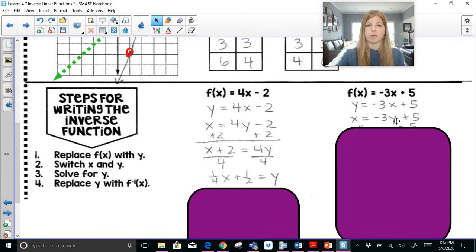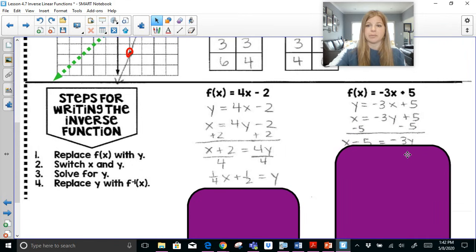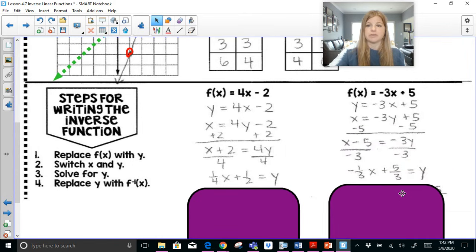Over here, if I wanted to get y by itself, I'd have to subtract 5 on both sides and then divide both sides by negative 3.